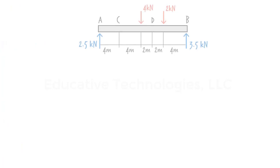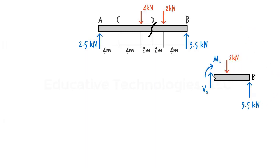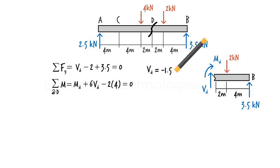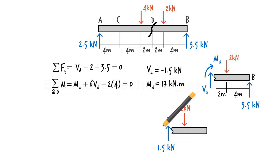To determine shear and moment at point D, let's redraw the beam, cut it at point D, and draw the free body diagram for the right segment this time. Since there is no axial force present, the internal axial force at D is omitted. From the equilibrium equations, we get VD equals negative 1.5 kilonewtons and MD equals 17 kilonewton meters. Here are the results shown graphically on the beam.